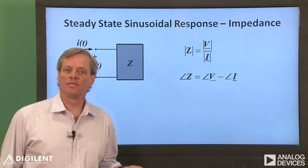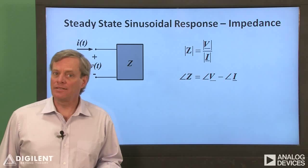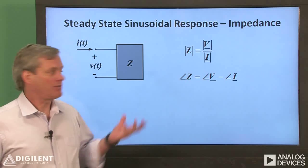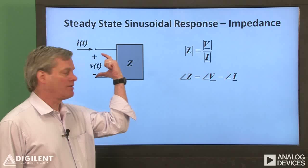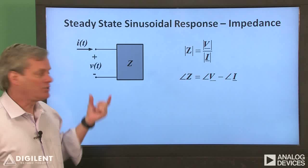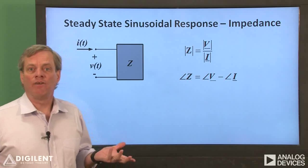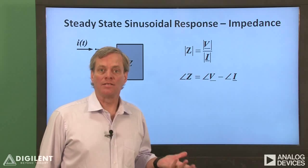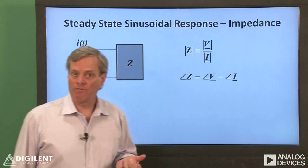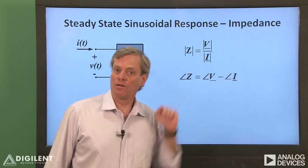First, let's briefly review the concept of impedance. Impedance is only a meaningful quantity in the context of steady-state sinusoidal analysis. If we have an arbitrary electrical circuit with some sinusoidal voltage difference across its terminals, the impedance is defined as the ratio of the voltage phasor to the current phasor. In polar coordinates, the impedance is defined by its magnitude and phase. The magnitude is the voltage phasor magnitude divided by the current phasor magnitude. The phase is the phase difference between the voltage phase and the current phase.